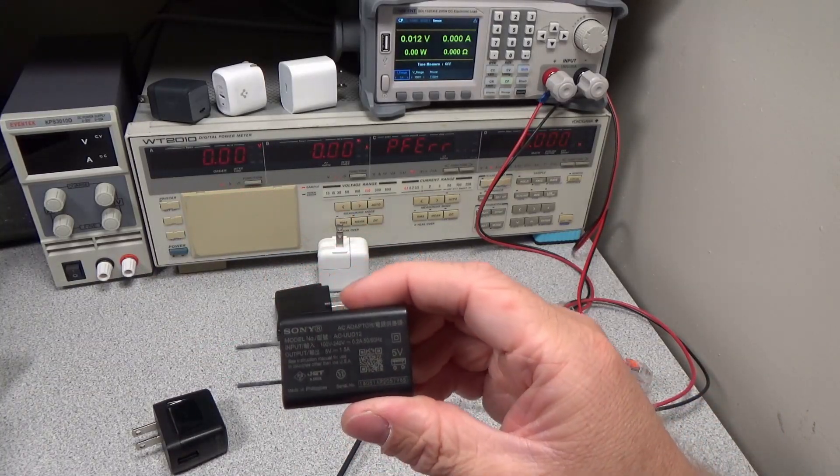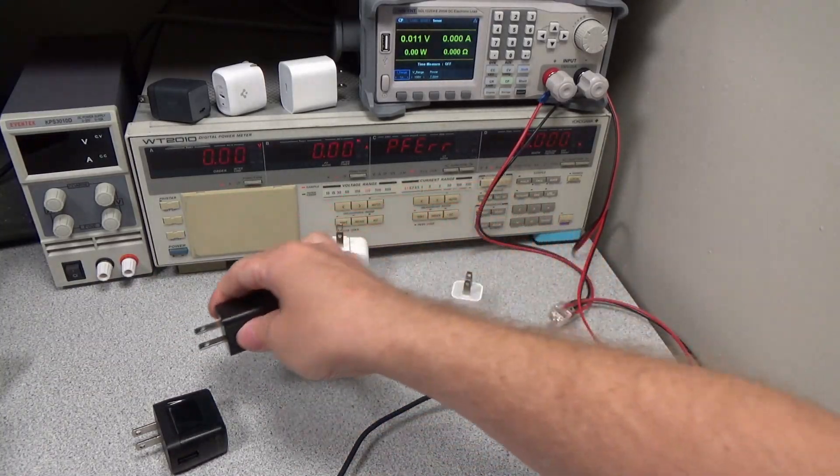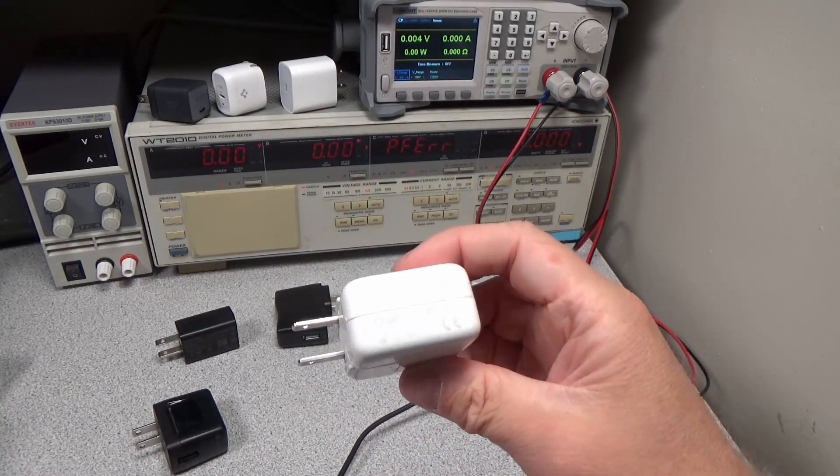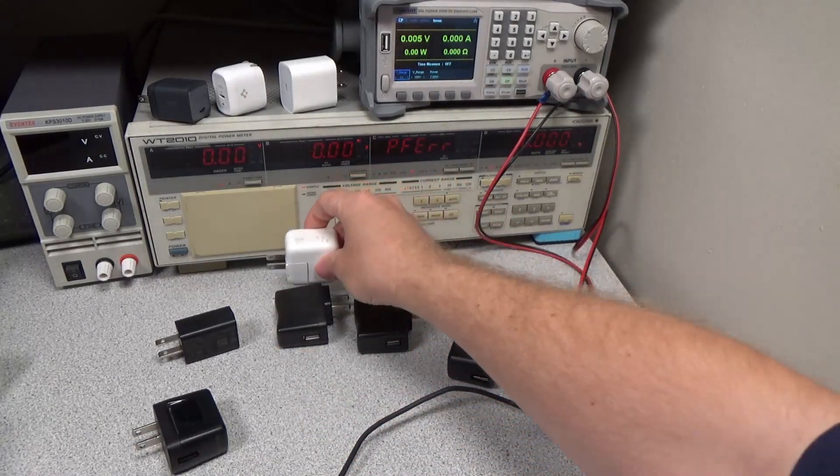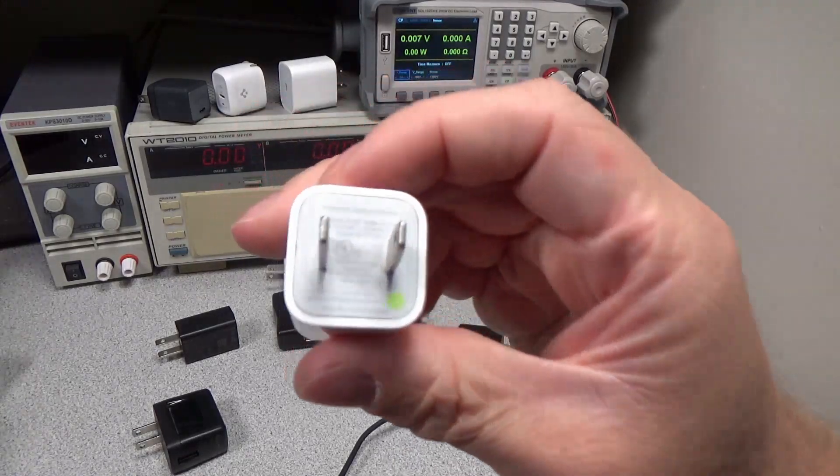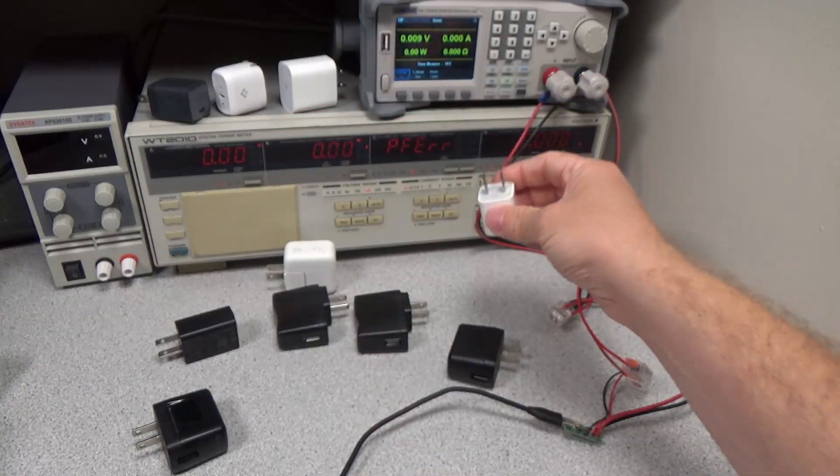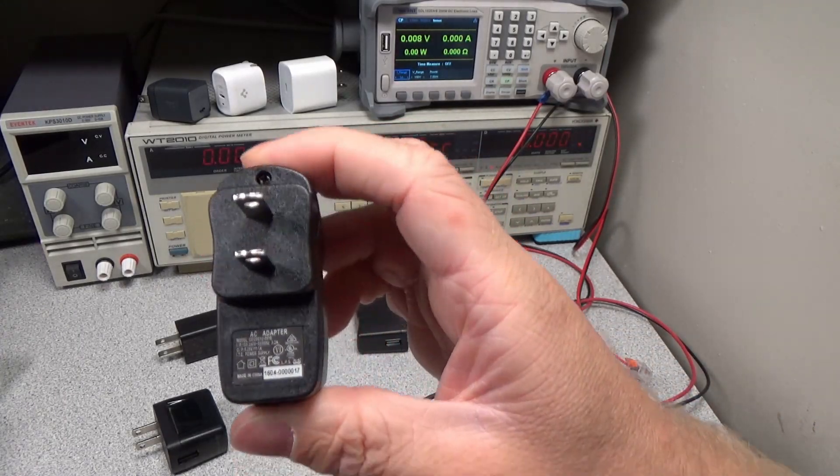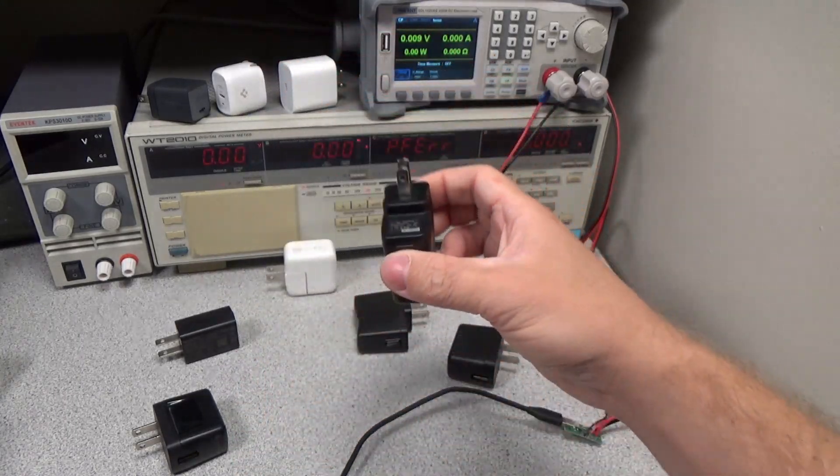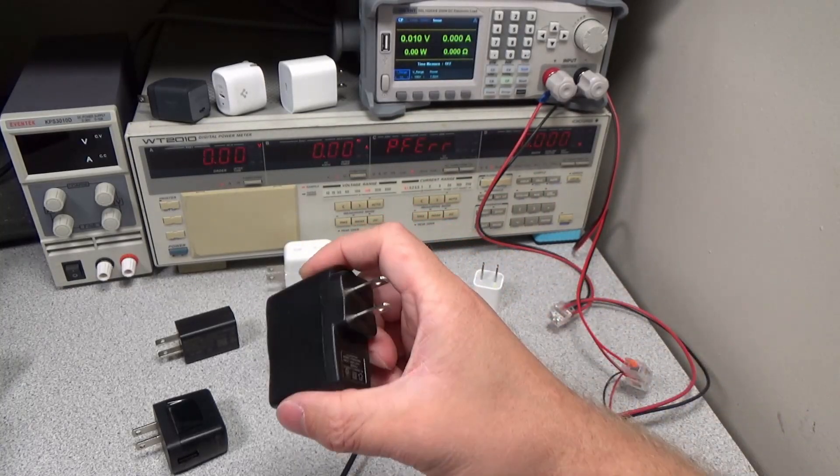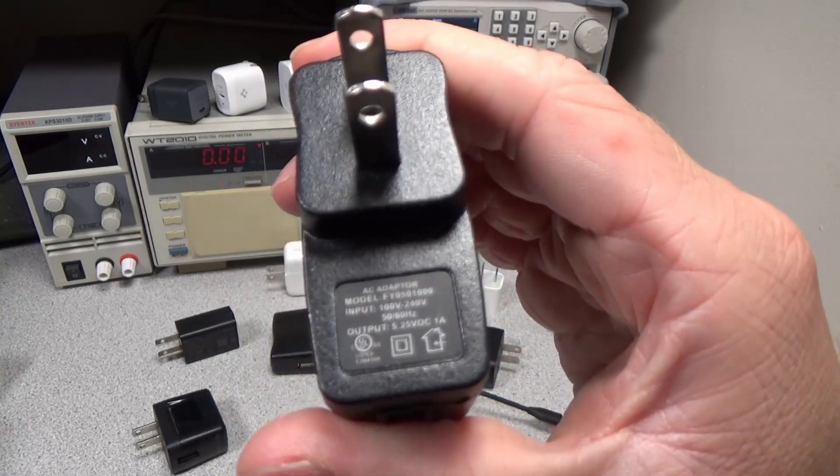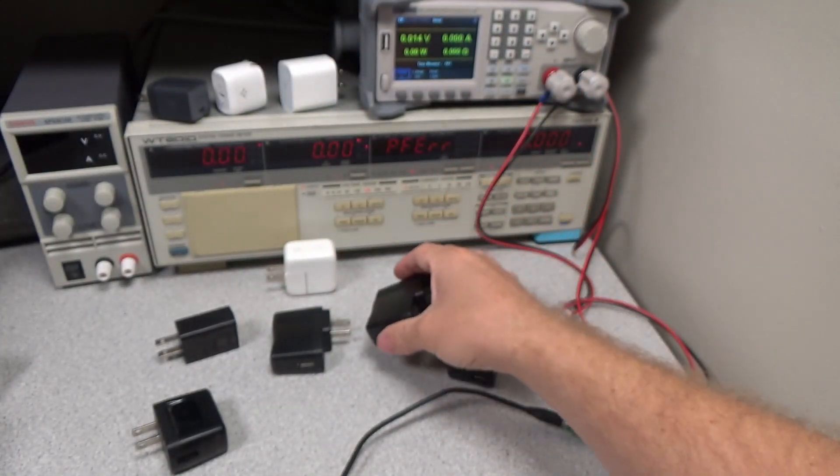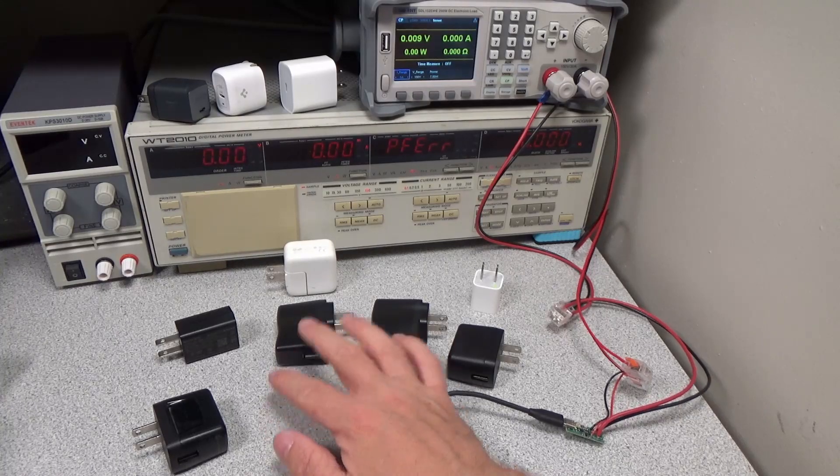A Sony USB-A adapter with 5 volts and 1.5 amps. This came with the camera I'm shooting with right now. The old Apple 10 watt brick is next, followed by an older Apple 5 watt brick. There are two generic USB-A power adapters, and I'll also do the newer 5 watt Apple brick.